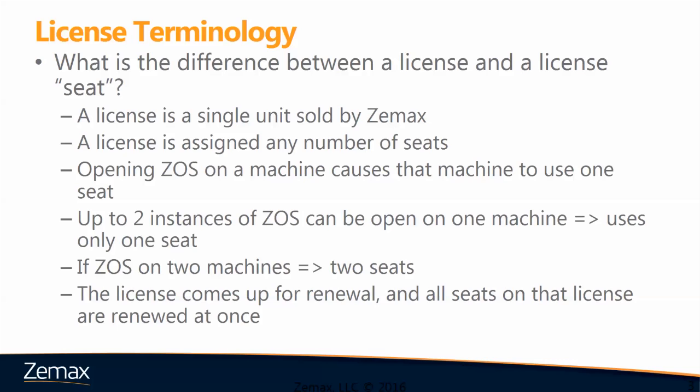When the license comes up for renewal, all seats on that license are treated as part of the license entity, and the license is renewed as a whole.